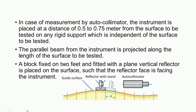When taking readings, the autocollimator should be kept at a distance of about half a meter to 0.75 meter from the surface to be tested. It is placed on a separate stand — not on the surface being tested. The parallel beam from the instrument is projected along the length of the surface. Here, this is the guide surface whose straightness is to be checked, and we mark different positions where we keep the reflector with the stand on the guide surface. Readings are taken through the eyepiece.